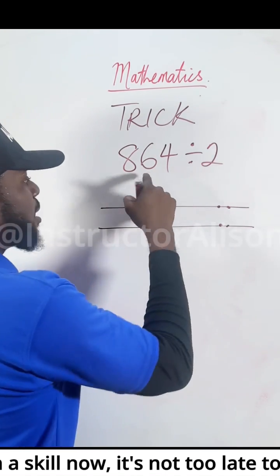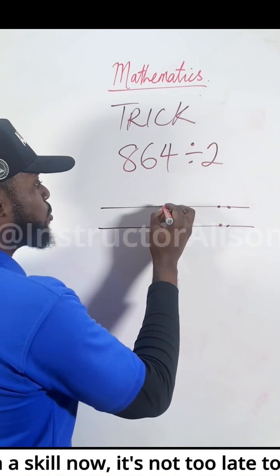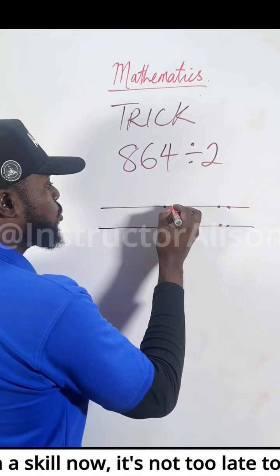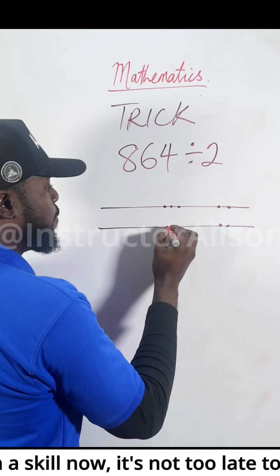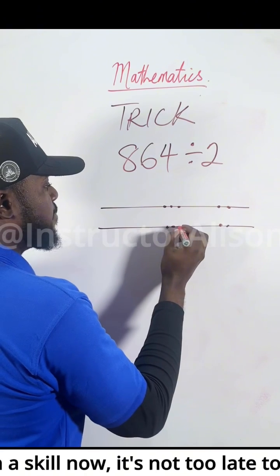The second one is 6, so just do 6 dots: 2, 3, 4, 5, 6.